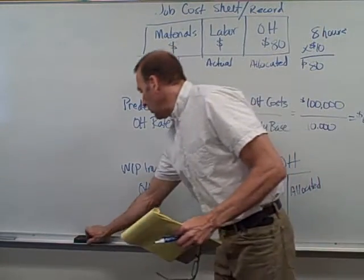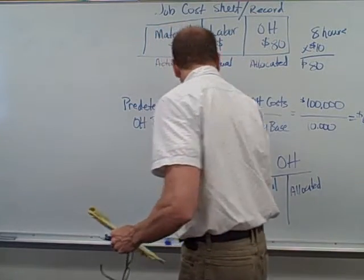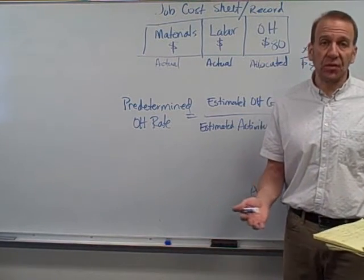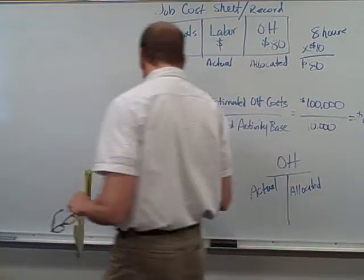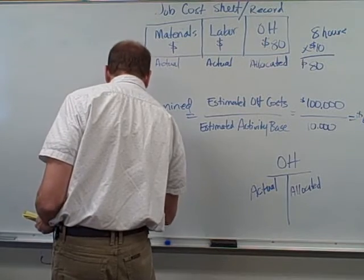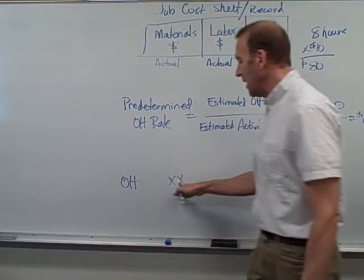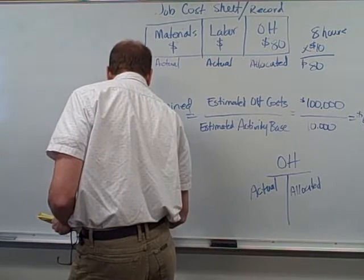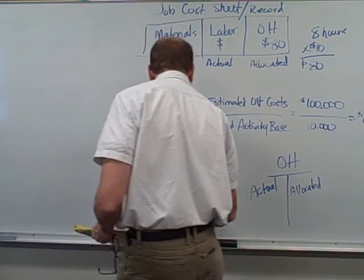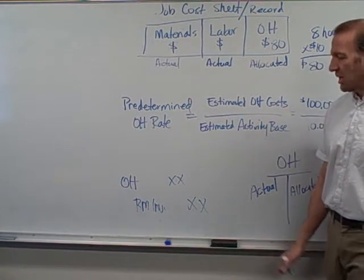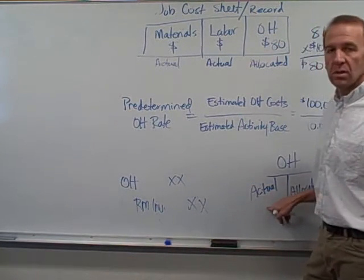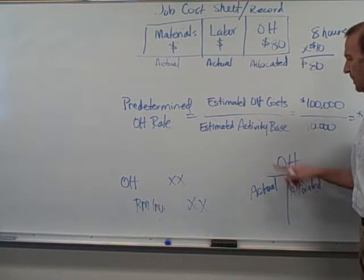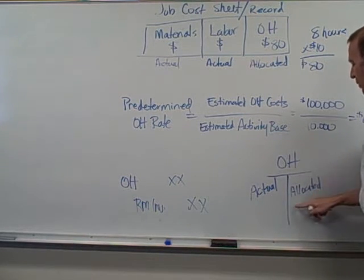Let me show you how costs get put into overhead. Let's say we've got some indirect materials — some glue, different things like that. That would go into our overhead account. Maybe it's $100 worth of glue and other materials going in there. We take it out of our raw materials inventory. So it comes out of raw materials and goes into the actual overhead account. Then as we incur direct labor hours, that's when the costs come out.